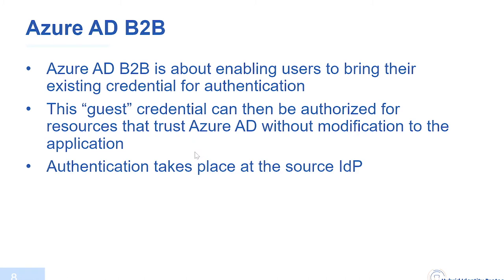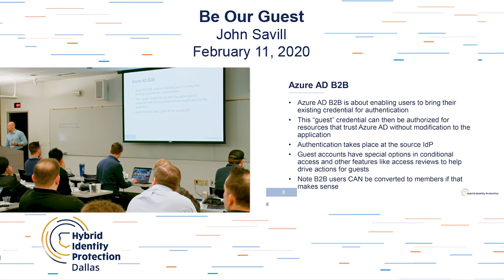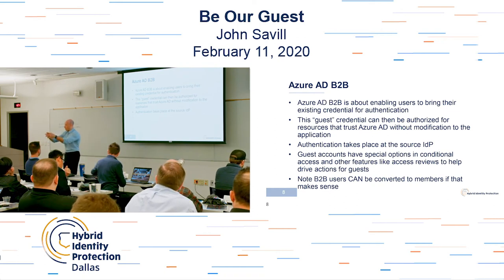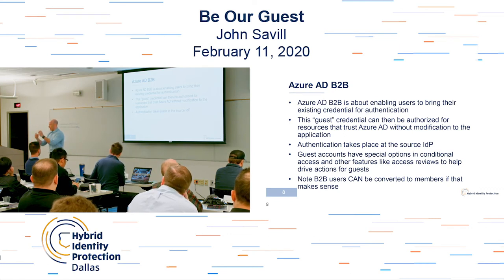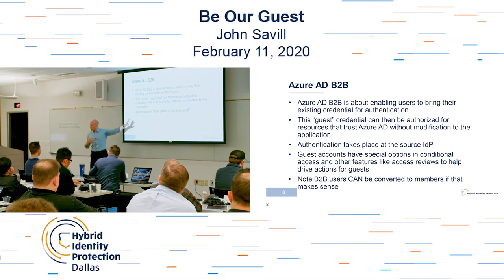The key point: authentication takes place at their IDP, so they have that one credential. They authenticate at their home IDP. If they leave that company and the company disables the account, they've lost all access to everything in your company because they can no longer authenticate. Even if the guest object still exists in your directory, they can't log on. So you're no longer worried about the lifecycle in terms of them accessing things they shouldn't. The guest still shows in Azure AD but is unusable because they can't authenticate at their home identity provider.